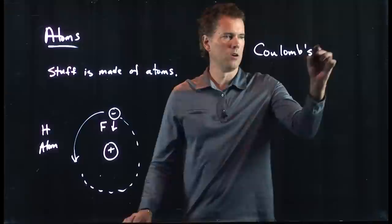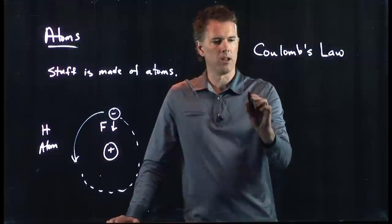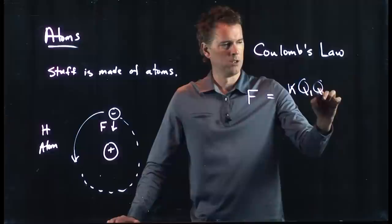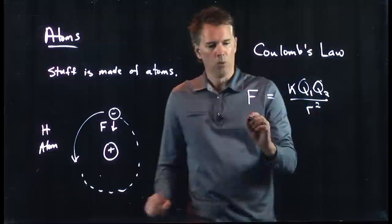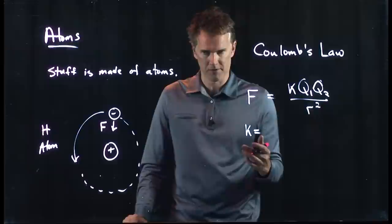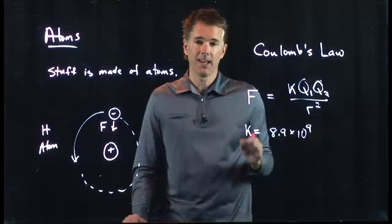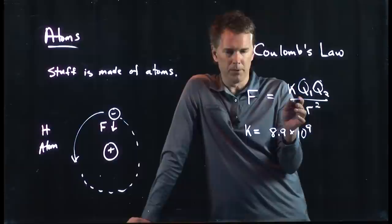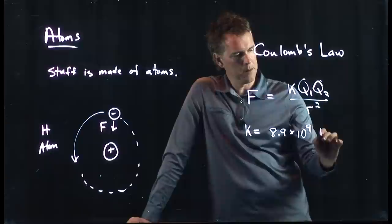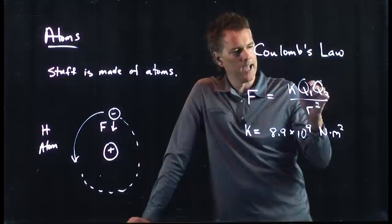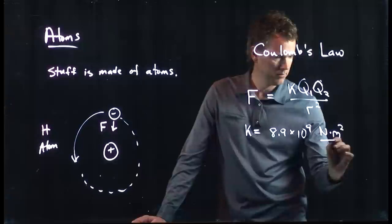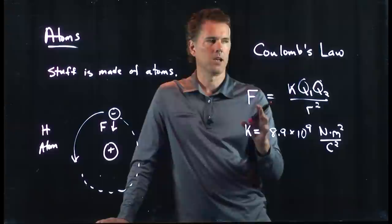Let's introduce Coulomb's Law. Coulomb's Law says: F = KQ1Q2 / R². K is Coulomb's constant: 8.9 times 10 to the 9. To figure out its units — you need to end up with newtons, so there's a newtons there; R squared is a distance, so there must be meters squared on top; and Q1 and Q2 are in coulombs, so there must be coulombs squared in the bottom.